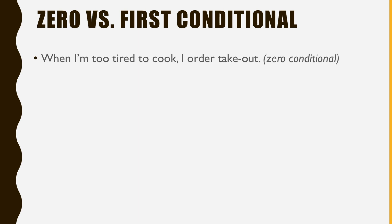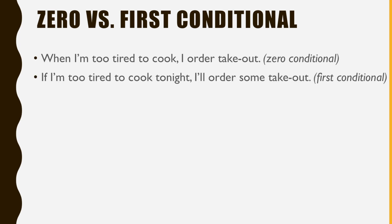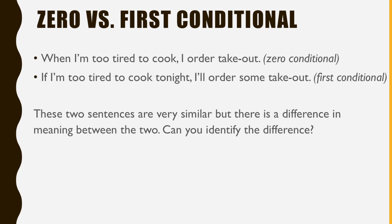When I'm too tired to cook, I order take-out. This is a zero conditional sentence. If I'm too tired to cook tonight, I'll order some take-out. This is a first conditional sentence. These two sentences are very similar, but there is a difference in meaning between the two. Can you identify the difference?